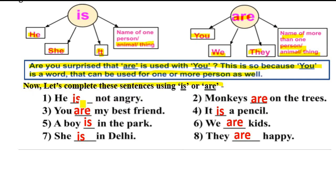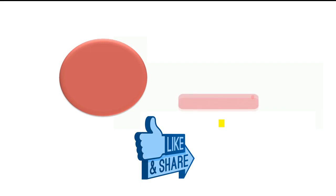आज हम complete करते हैं is or are। He dash not angry — he के संग is लगता है — तो he is not angry। Monkeys are on the trees। You are my best friend। It is a pencil। A boy is in the park। We are kids। She is in Delhi। They are happy। इस तरह से sentences होते हैं — तो बच्चों आप इस तरह से worksheet करेंगे।